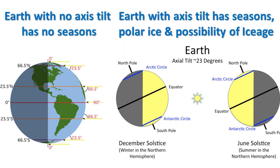If the Earth had no axis tilt, the Sun would always uniformly illuminate both hemispheres, and consequently there would be no seasons. When the axis is tilted, the situation results in seasons. In one part of the year, the North Pole is pointed away from the Sun, giving a northern winter, but towards the Sun in summer. A high axis tilt cools a much larger area around the poles in winter.